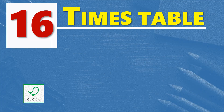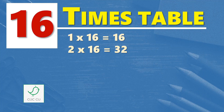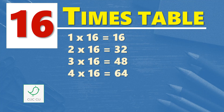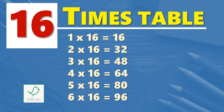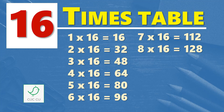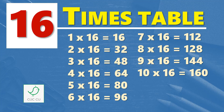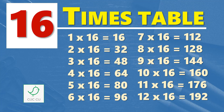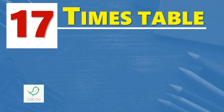Sixteen times table. One times sixteen is sixteen, two times sixteen are thirty-two, three times sixteen are forty-eight, four times sixteen are sixty-four, five times sixteen are eighty, six times sixteen are ninety-six, seven times sixteen are one hundred and twelve, eight times sixteen are one hundred and twenty-eight, nine times sixteen are one hundred and forty-four, ten times sixteen are one hundred and sixty, eleven times sixteen are one hundred and seventy-six, twelve times sixteen are one hundred and ninety-two.